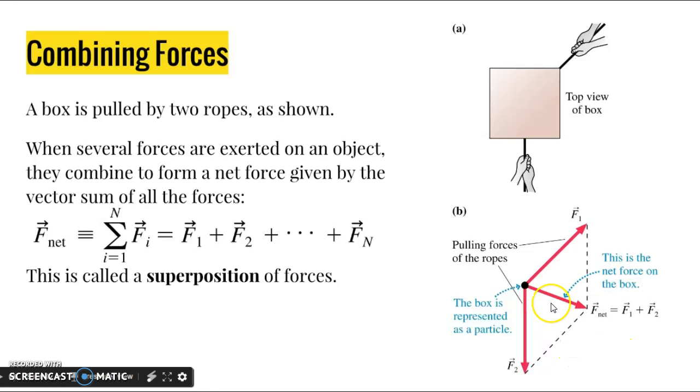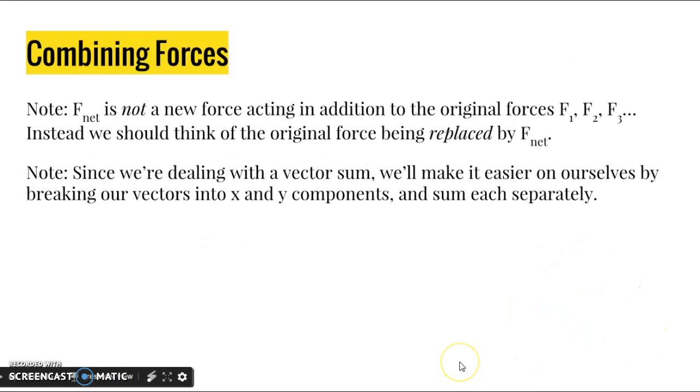Instead of drawing our two vectors here, we can represent it mathematically as one resultant vector, a net force vector, in this direction here with this size. That vector there is the same thing as adding together force 1 and force 2.